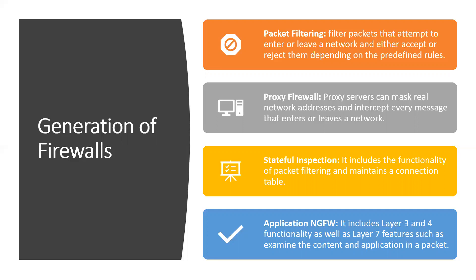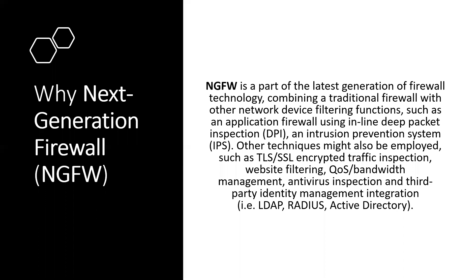Application next-generation firewalls have the capabilities of Layer 3, Layer 4, as well as Layer 7 features, which examine the content and the application the user is trying to access, whether internal or external, and based on that it determines how to deal with the packet. Next-generation firewalls are the latest generation of firewall technologies combining traditional firewall features with add-on Layer 7 capabilities such as packet-level inspection, IPS (Intrusion Prevention System), IDS features, TLS and SSL encrypted traffic inspection, multiple bandwidth management, antivirus inspection, and identity management tools like LDAP, ADS, and Active Directory.